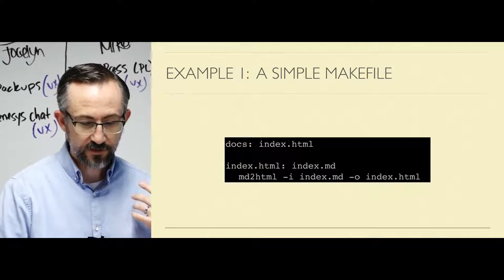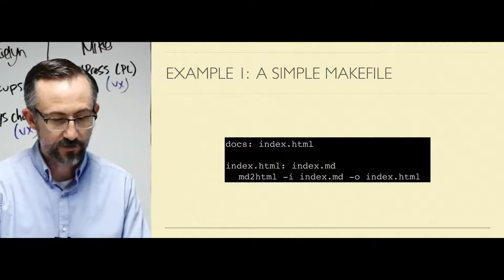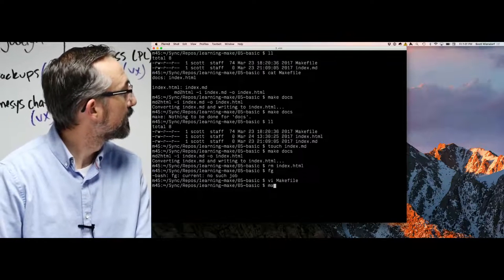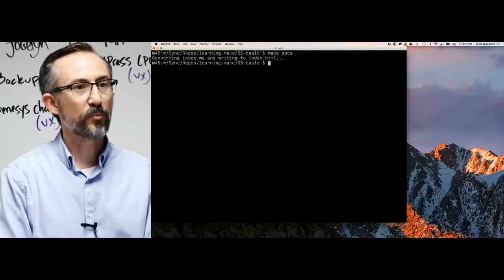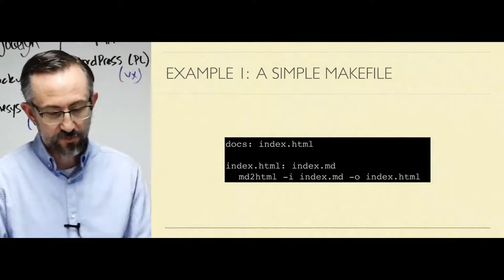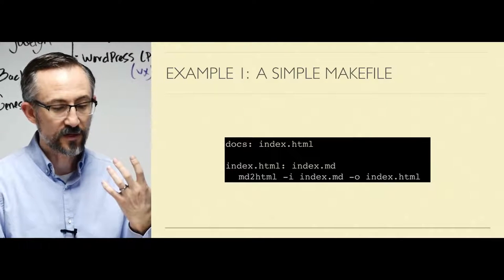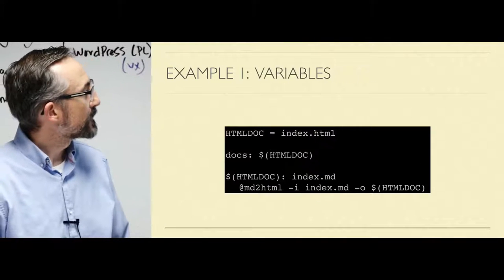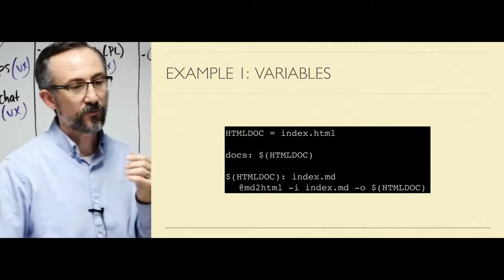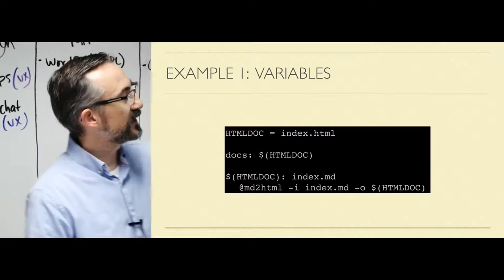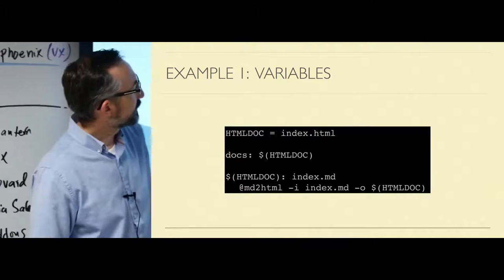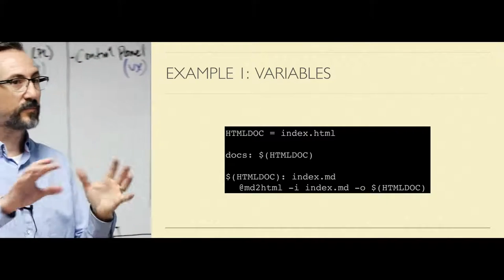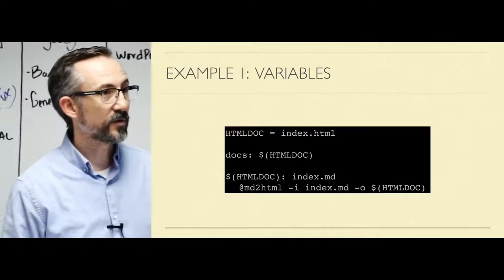We can make this better. We could add the at sign here — and now we don't get the echoing of the output. We can improve this further: we see that we've got index.html in three places — once as a dependency, once as a target name, and once as something in the command. If we create a variable, now if we decided to rename the output document something else, we just need to change it in html_doc here. Docs has a dependency on that variable; the variable appears as the target, and it also appears inside of the command. To Make, it just does very simple string substitutions — it doesn't matter where the variable is, Make will find it and swap it out.